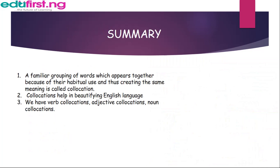In summary, a familiar grouping of words which appears together because of their habitual use, and thus creates the same meaning, is called collocation. Collocation helps in beautifying the English language. We have verb collocation, adjective collocation, and noun collocation.